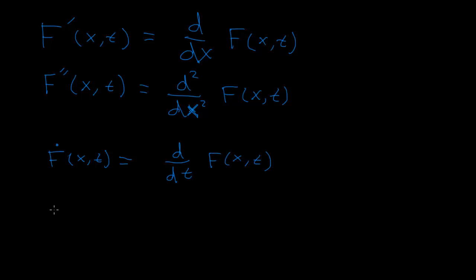And then, just like with the primes, we can add two dots. We can say f double dot is a function of x and t, and that's just two derivatives, the second derivative with respect to time of this function f of x and t.